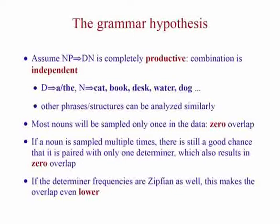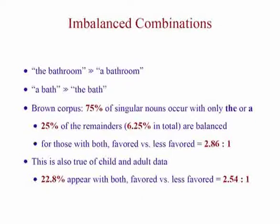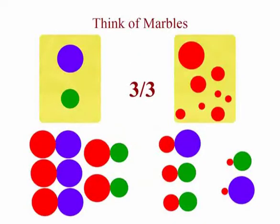Even if a noun appears multiple times, there's still a chance it's paired with only one determiner exclusively — just like tossing a fair coin three times and ending up with three heads. The situation is actually worse than that, because the combinations of determiners and nouns are not balanced. For example, 'the bathroom' is a lot more common than 'a bathroom' — both are grammatical, but not equal. In Brown Corpus data, 75% of singular nouns occur with only one of the two determiners, and for the 25% that occur with both, the ratio of the preferred to non-preferred determiner is almost 3 to 1.